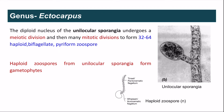In the unilocular sporangia, the nucleus first undergoes meiotic division and then many mitotic divisions to form 32 to 64 haploid, biflagellate, pyriform zoospores. These haploid zoospores germinate to form the gametophytic thallus, which is haploid. The plurilocular sporangia and the diploid zoospores do not have a role in alternation of generation, whereas the haploid zoospores formed in unilocular sporangia play a role in alternation of generation.